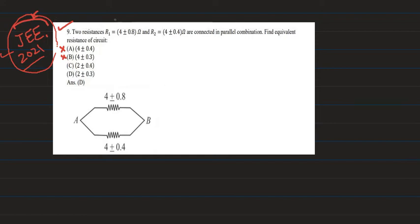So here we have R1 and R2 and we have to find out the equivalent resistance. These two resistances are connected in parallel combination. So we have the equivalent resistance to find out.